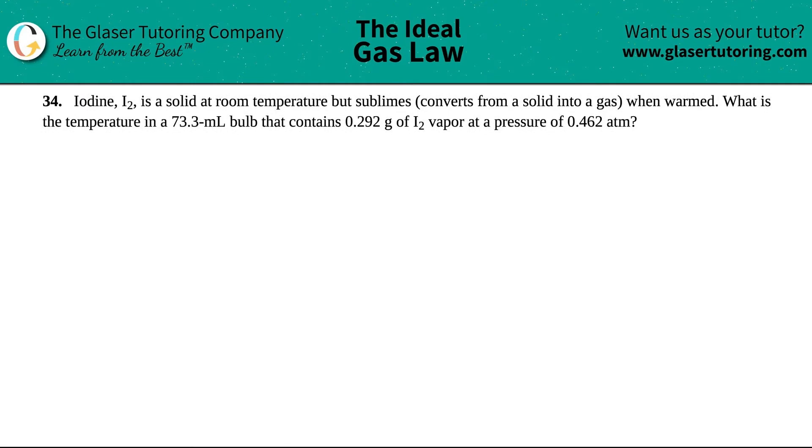Number 34. Iodine, which is I2, is a solid at room temperature but sublimes, so it converts from a solid into a gas when warmed. What is the temperature in a 73.3 milliliter bulb that contains 0.292 grams of iodine I2 vapor at a pressure of 0.462 atm?